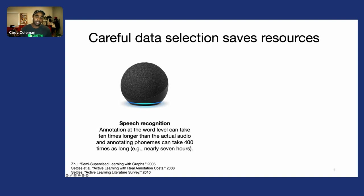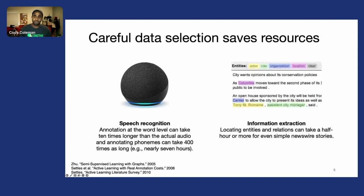If we do finer-grain annotations, it can take up to 400 times as long. Even for simple tasks like information extraction, locating entities and relations can take a half an hour or more, even for simple news stories.